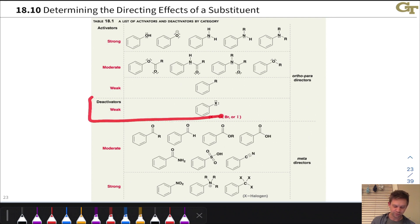And the halogens, which are deactivating due to electronegativity, are also ortho-para directors, whereas all of our withdrawing groups by resonance are meta directors here.